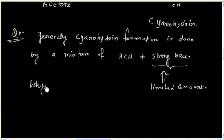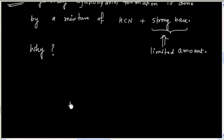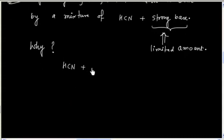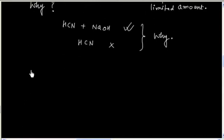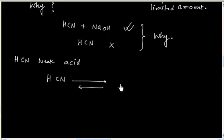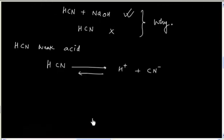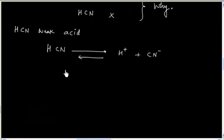The reason is that HCN is a weak acid and it ionizes to a very small extent — only about 1–3% dissociation. So this means the reaction mixture contains very little nucleophile CN⁻ when using HCN alone.